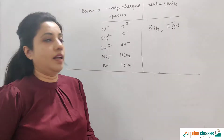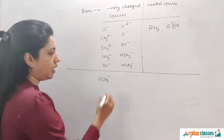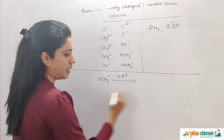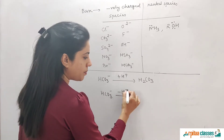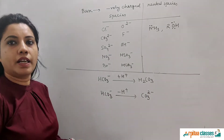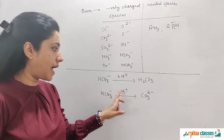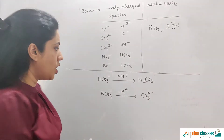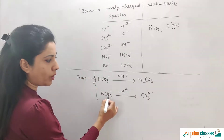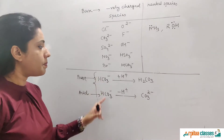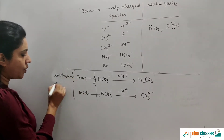Now let's move to the next concept. Take HCO3⁻: if you add H⁺ to it, it becomes H2CO3; if you remove H⁺ from it, it converts into CO3²⁻. So HCO3⁻ can accept a proton (acting as a base) and can also lose a proton (acting as an acid). Any species that has both capabilities — being an acid and a base — is called an amphoteric species.